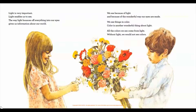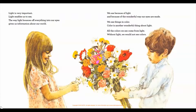Light is very important. Light enables us to see. The way light bounces off everything into our eyes gives us information about our world. We see because of light and because of the wonderful way our eyes are made. We see things in color. Color is another wonderful thing about light. All the colors we see come from light. Without light, we would not see colors.